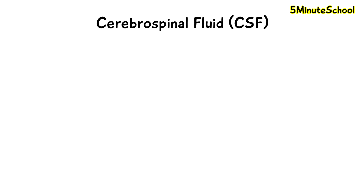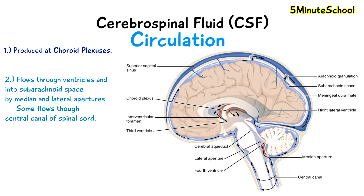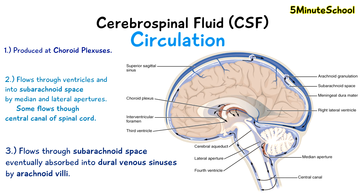Cerebrospinal fluid is produced by the choroid plexus of each ventricle. It flows through the ventricles and into the subarachnoid space via the median and lateral apertures. Some of the cerebrospinal fluid flows through the central canal of the spinal cord. It then flows through the subarachnoid space and is absorbed into the dural venous sinuses via the arachnoid villi.